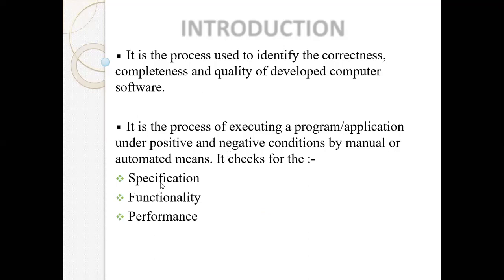It checks for the specification, functionality, and performance. The specification is the description of the software product. The functionality is the ability of the software system to do the work for which it was designed. For example, like a Mercedes or Limousine — that is the functionality, like an advertisement. We have to check whether it is made or not.